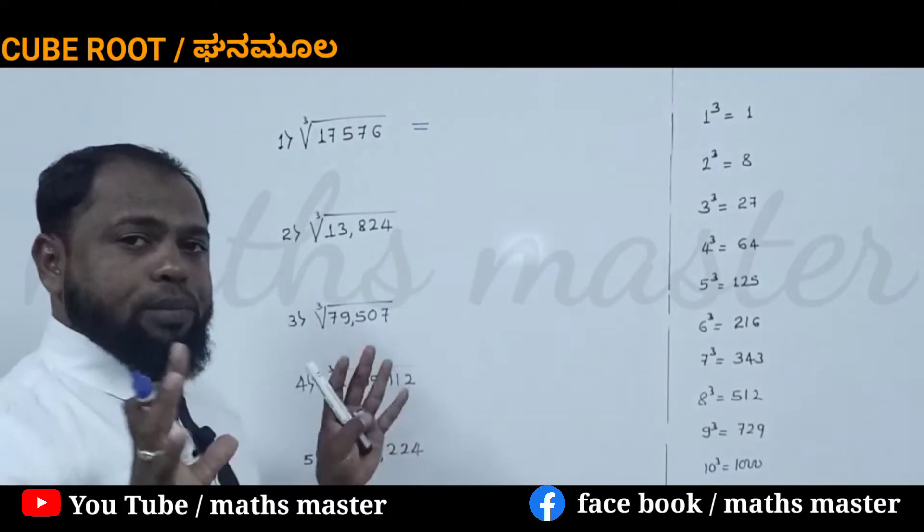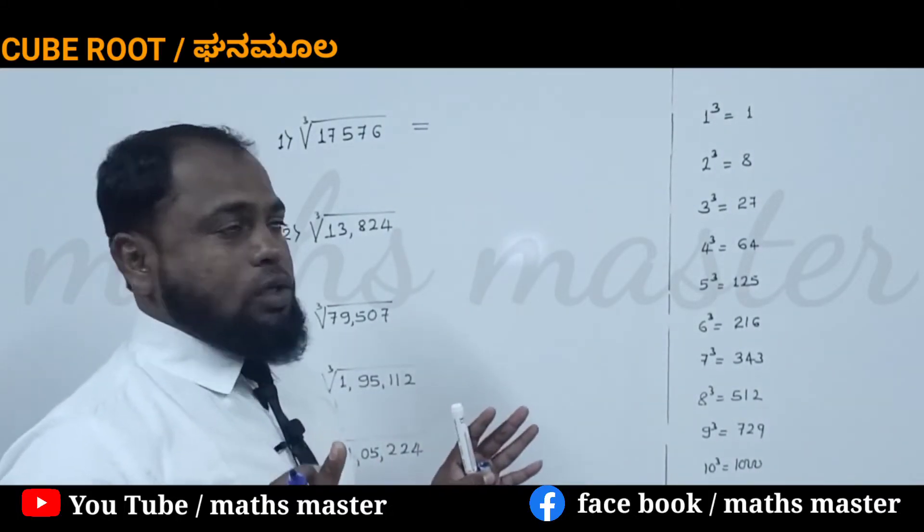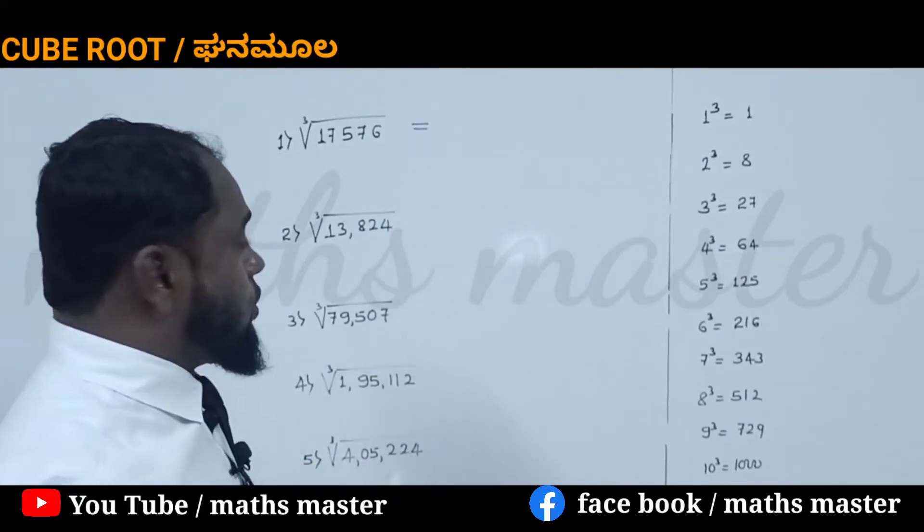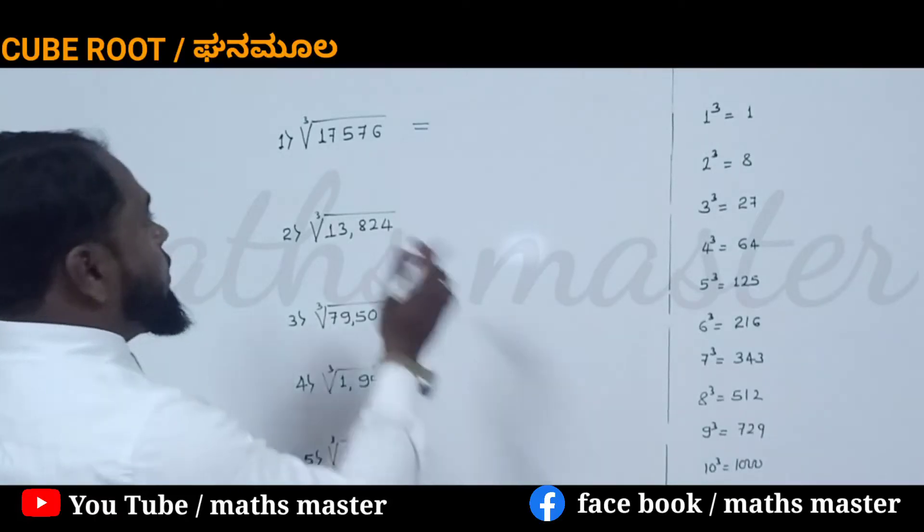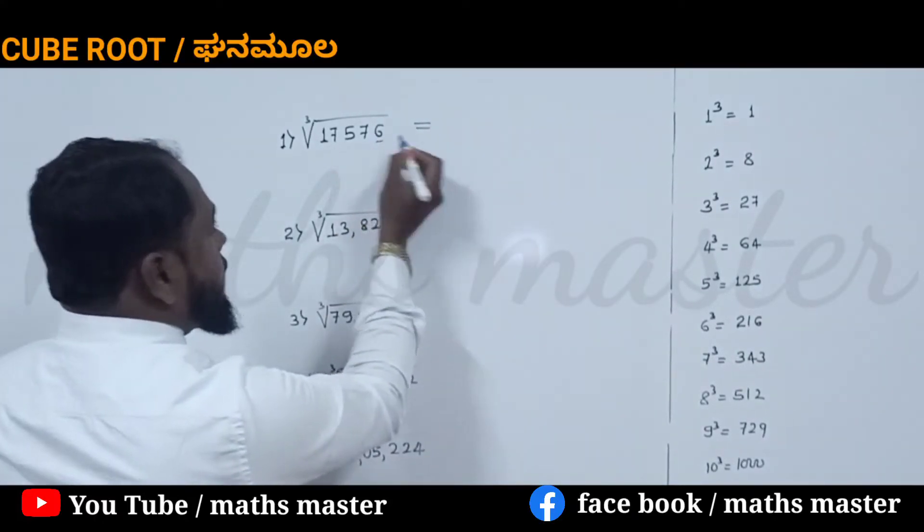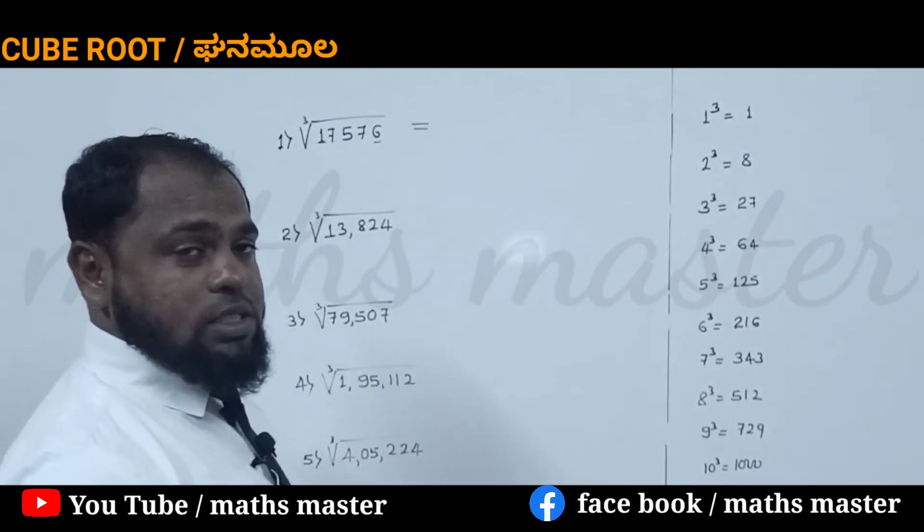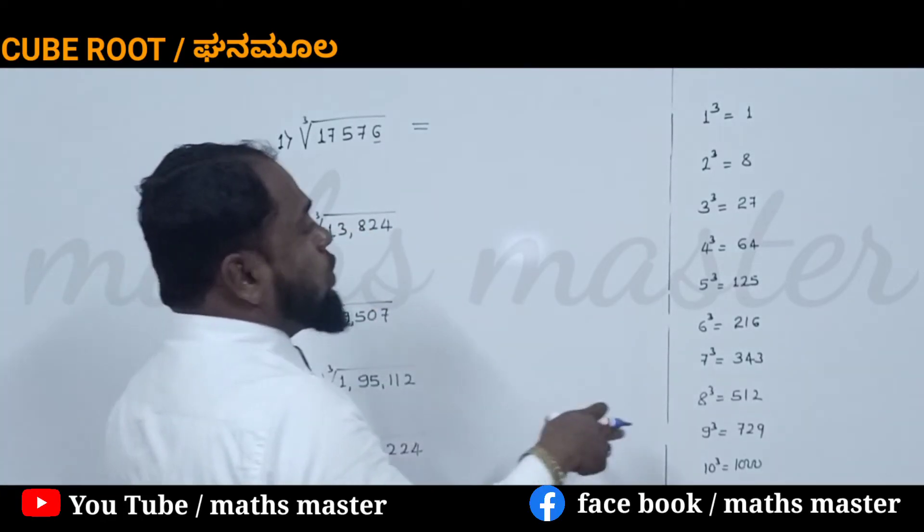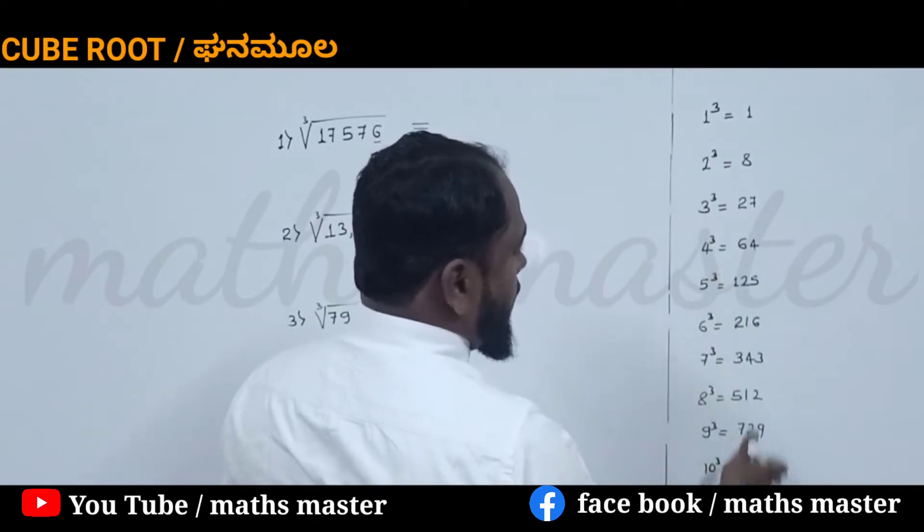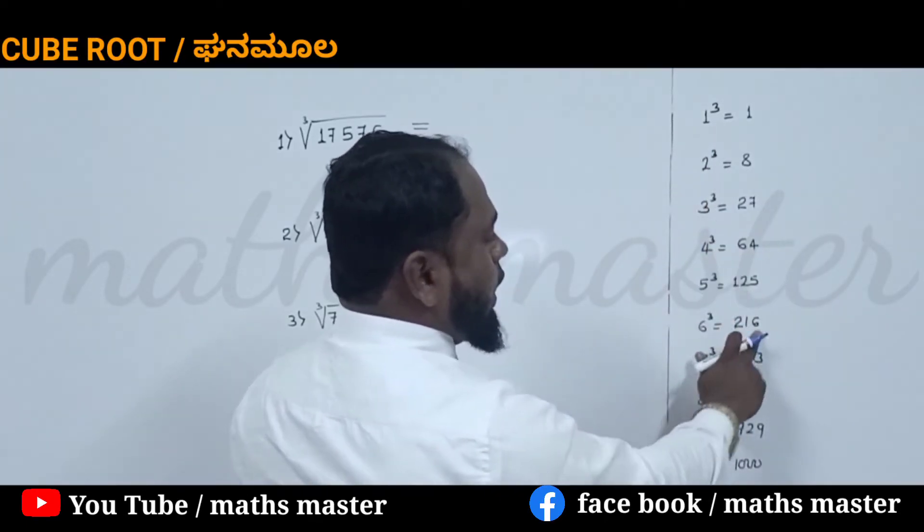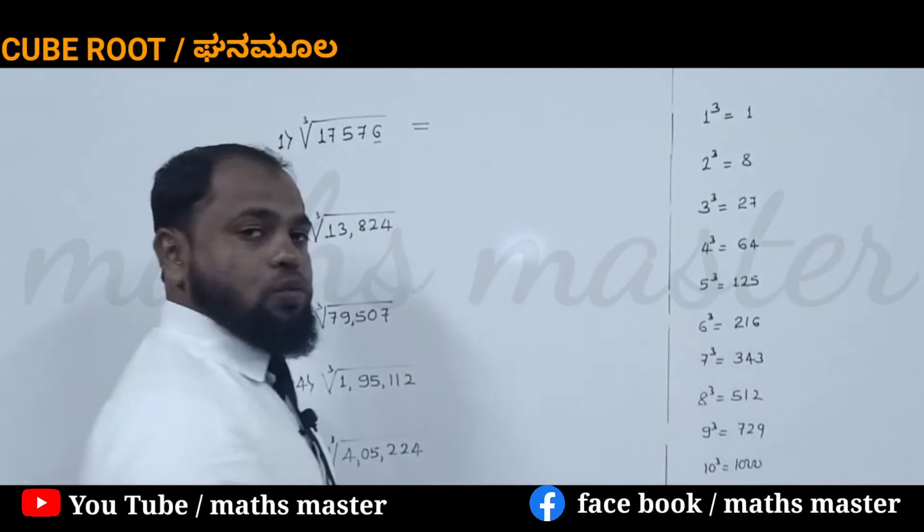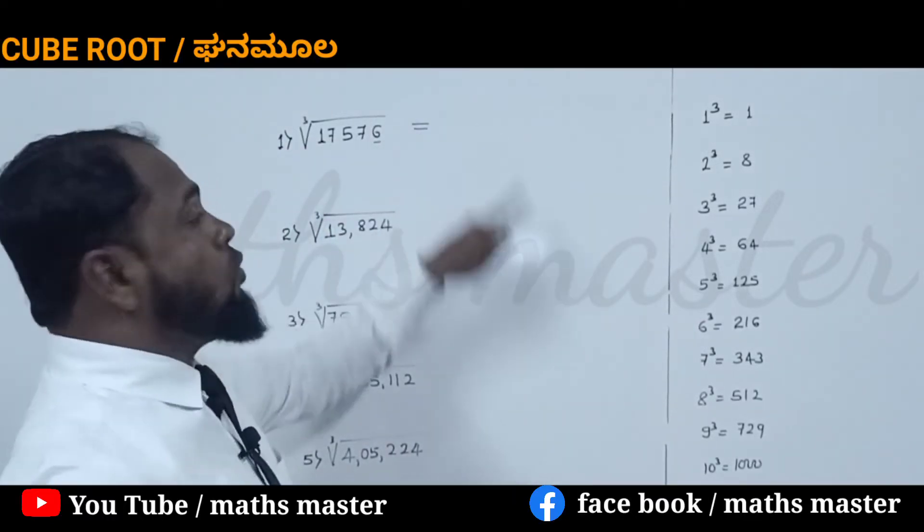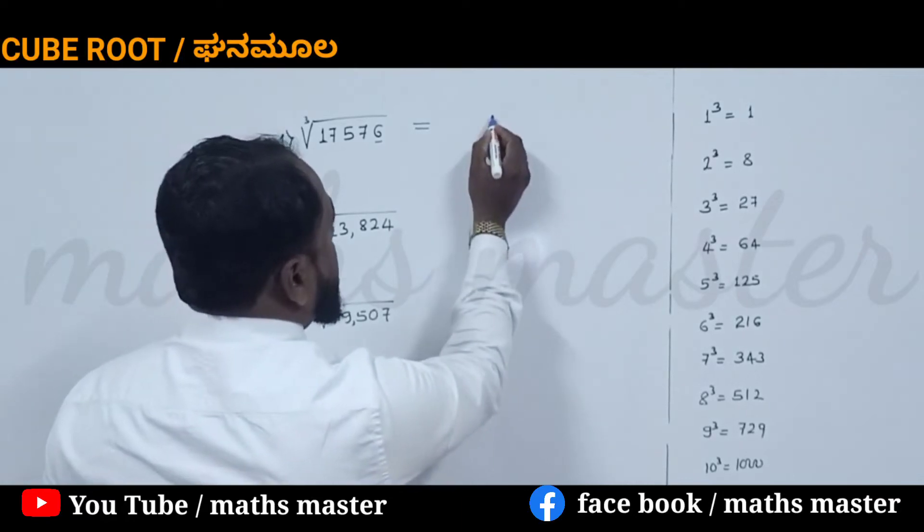Practice is very important. If we practice, definitely we can solve this within fraction of seconds. First you have to observe the number which is present in the unit place. If 6 is there in unit place, its cube root will have 6 in the unit place.